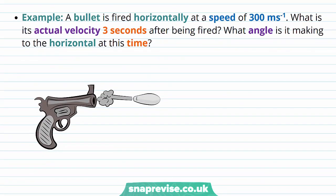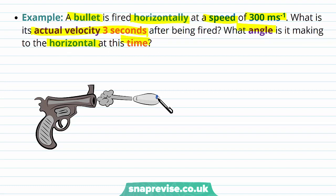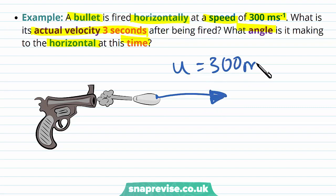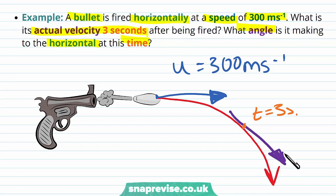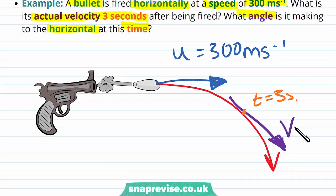So let's have a look at an example. A bullet is fired horizontally at a speed of 300 meters per second. What is its actual velocity three seconds after being fired, and what angle is it making to the horizontal at this time? The bullet has been fired horizontally with initial speed 300 meters per second, and at a time t equal to three seconds we want to know what the actual velocity v is.